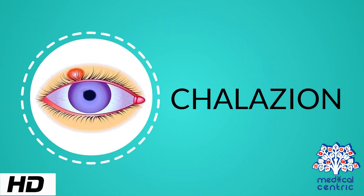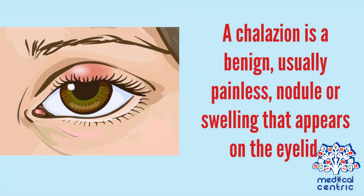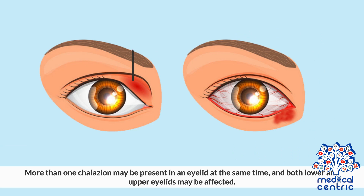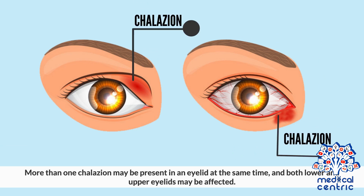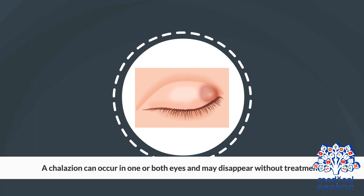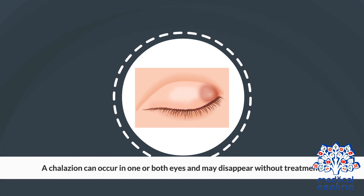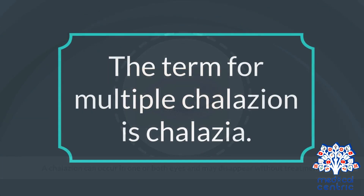Today's topic is chalazion. A chalazion is a benign, usually painless, nodule or swelling that appears on the eyelid. More than one chalazion may be present in an eyelid at the same time, and both lower and upper eyelids may be affected. A chalazion can occur in one or both eyes and may disappear without treatment. The term for multiple chalazion is chalazia.